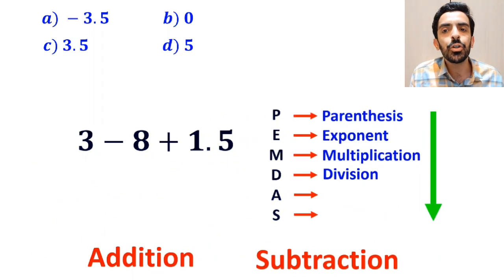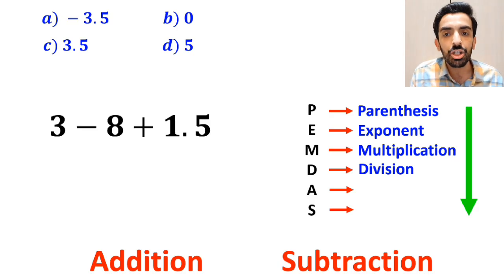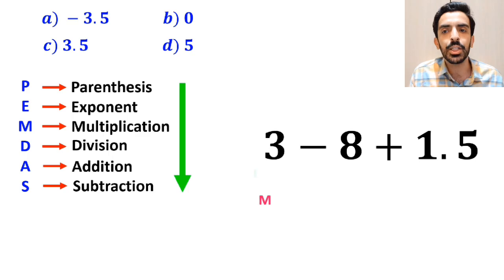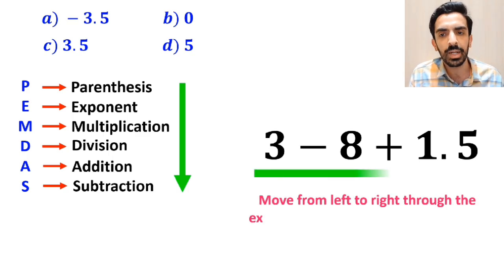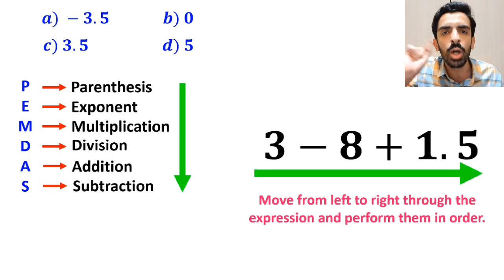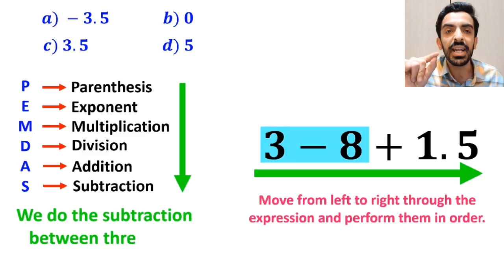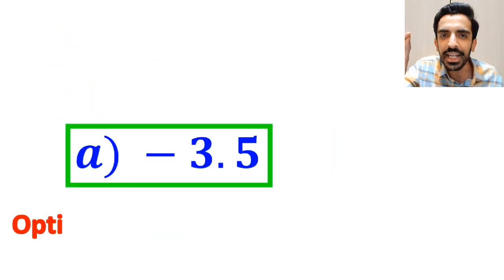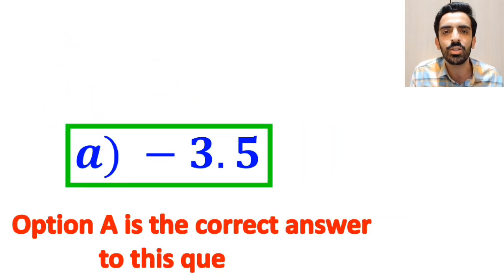Once again, we should remember that addition and subtraction also have the same level of priority. And the best thing to do here is to move from left to right through the expression and perform them in order. So, first we do the subtraction between 3 and 8, which simplifies this expression to negative 5 plus 1.5. And finally, the value of this expression is equal to negative 3.5. Therefore, option A is the correct answer to this question.